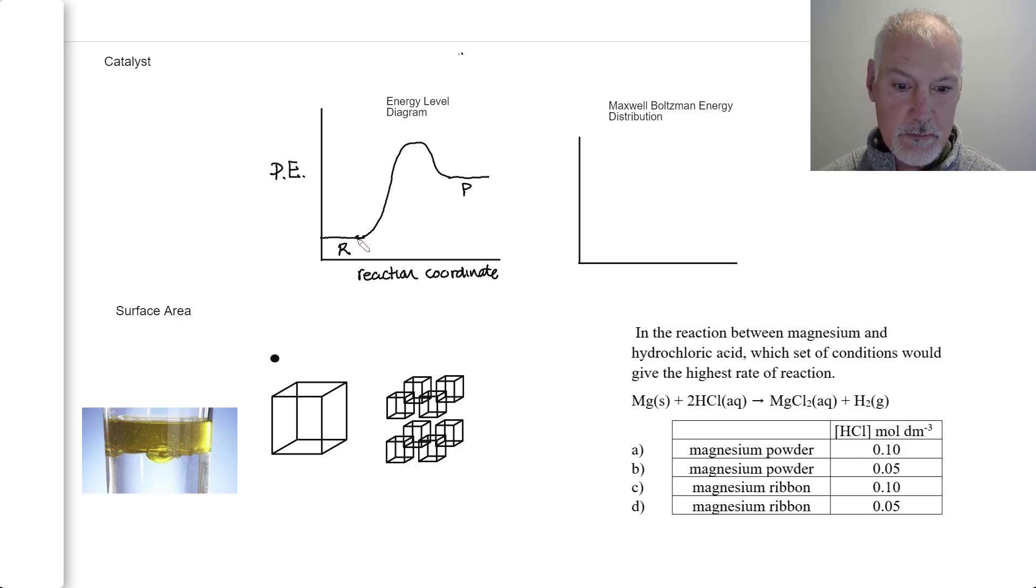The height of that hill, we've seen it earlier, is referred to as the activation energy. So that would represent my activation energy, the minimum energy required for a successful collision.